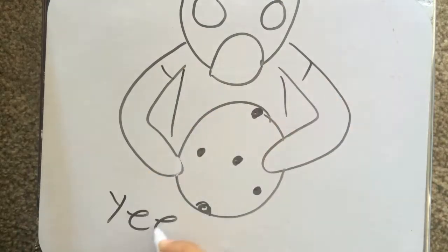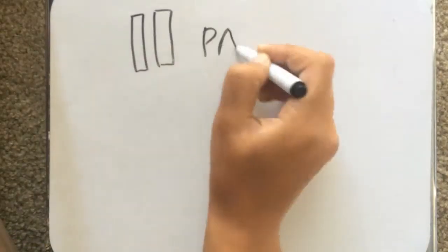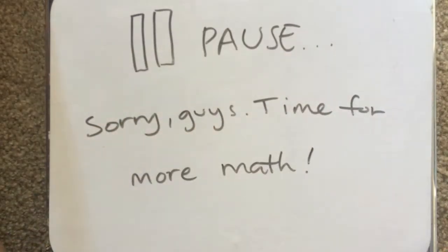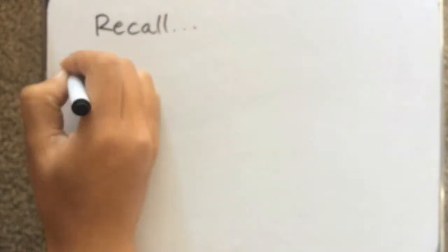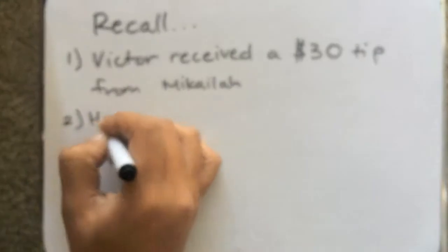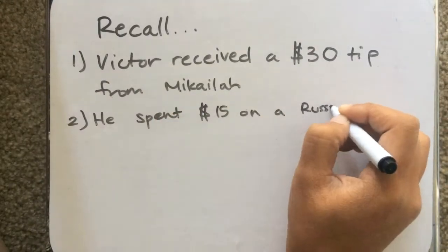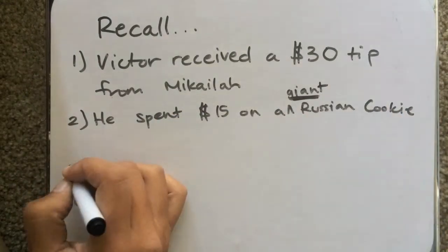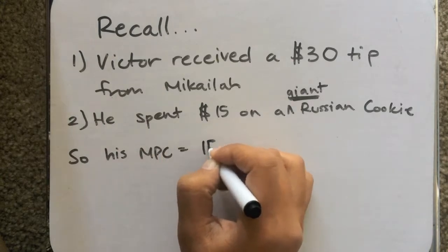Now, you still have them writing utensils, right, kids? It's still math time. Recall that he received a $30 tip, and Victor spent $15 on that giant cookie. So his marginal propensity to consume is also 0.5.